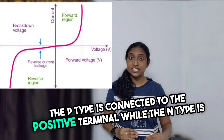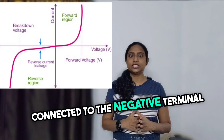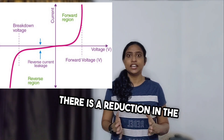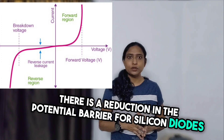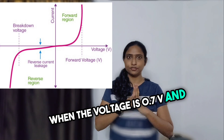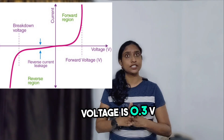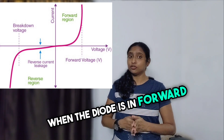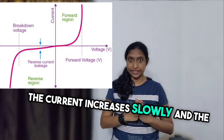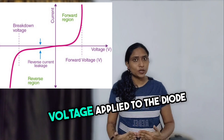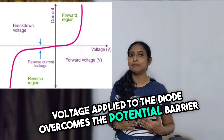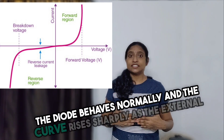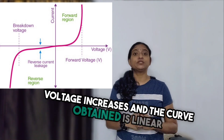When the PN junction diode is in forward bias condition, the P type is connected to the positive terminal while the N type is connected to the negative terminal of the external voltage. When the diode is arranged in this manner, there is a reduction in the potential barrier. For silicon diodes, when the voltage is 0.7 volts, and for germanium diodes, when the voltage is 0.3 volts, the potential barrier decreases and there is a flow of current. When the diode is in forward bias, the current increases slowly and the curve obtained is non-linear as the voltage applied overcomes the potential barrier. Once the diode overcomes the potential barrier, the diode behaves normally and the curve rises sharply as the external voltage increases, and the curve obtained is linear.